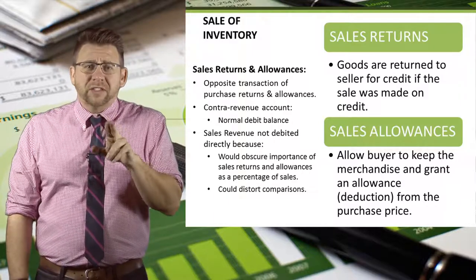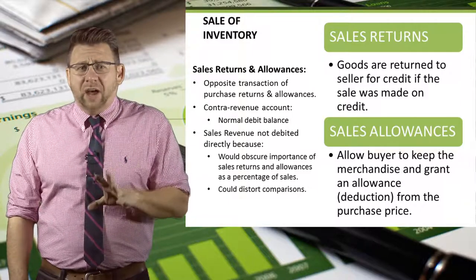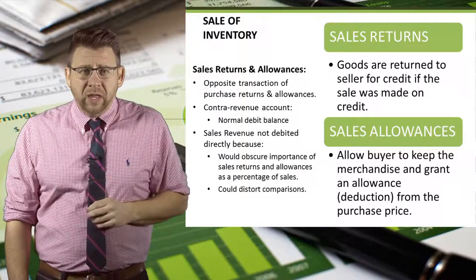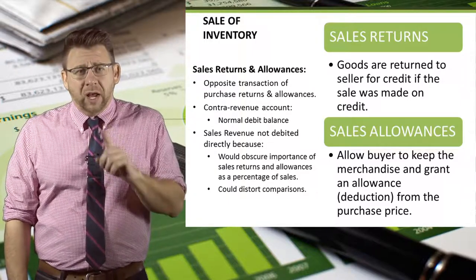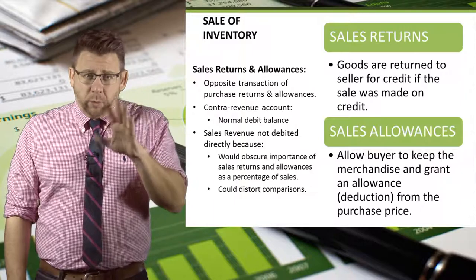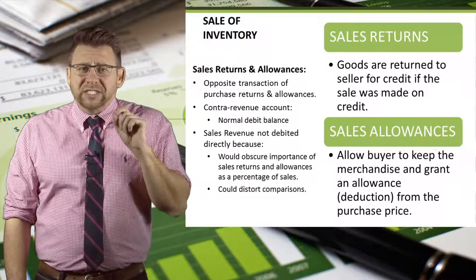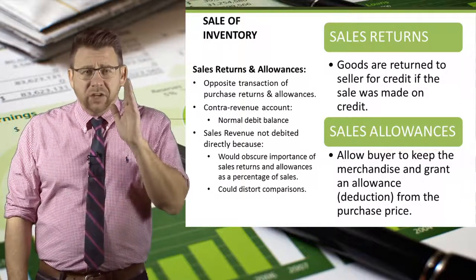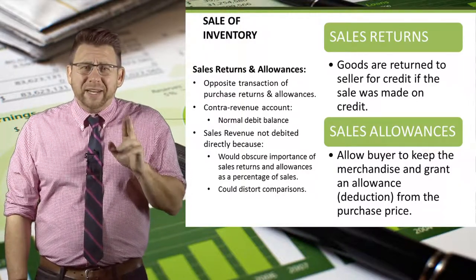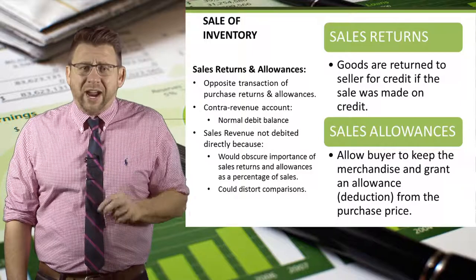The next thing we need to deal with is the return of the Taylor Swift records. Sales returns and allowances are just the opposite transaction of purchase returns and allowances — a reversal of the sales journal entry, with one exception. Rather than debit sales revenue, which is what we would do if reversing that journal entry entirely, we debit an account called sales returns and allowances. This is a contra revenue account. If we were to debit sales revenue directly, it may distort the revenue numbers and make it difficult for managers to track returns.